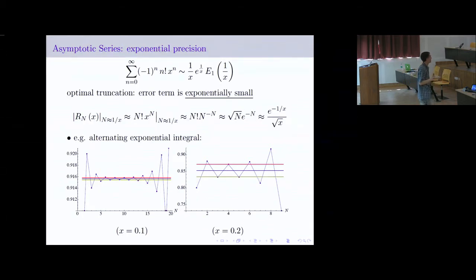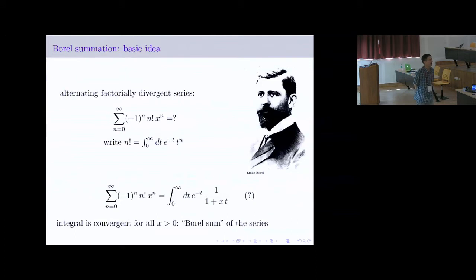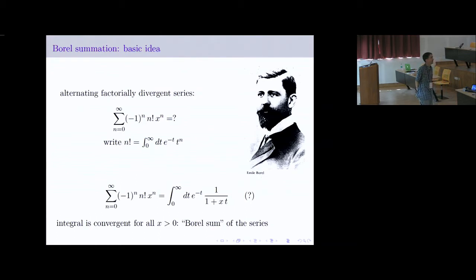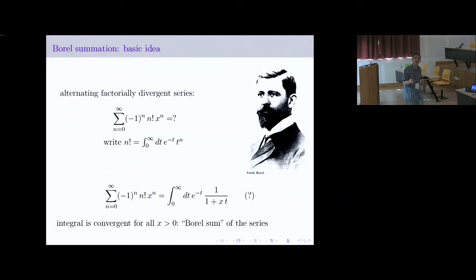There are many ways to study divergent series. The one best suited for resurgence and complex analysis is the so-called Borel summation technique. Here's the simplified version. We write n factorial in its integral representation, insert that into the divergent series, bravely interchange integration and summation, and then we're just integrating over a geometric series. The resulting integral is perfectly well defined for all positive x, or x with positive real part. The idea is to define this to be the Borel sum of that divergent series.